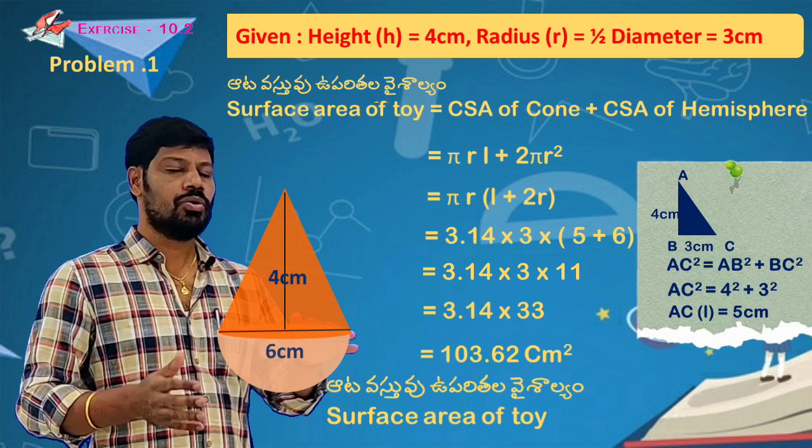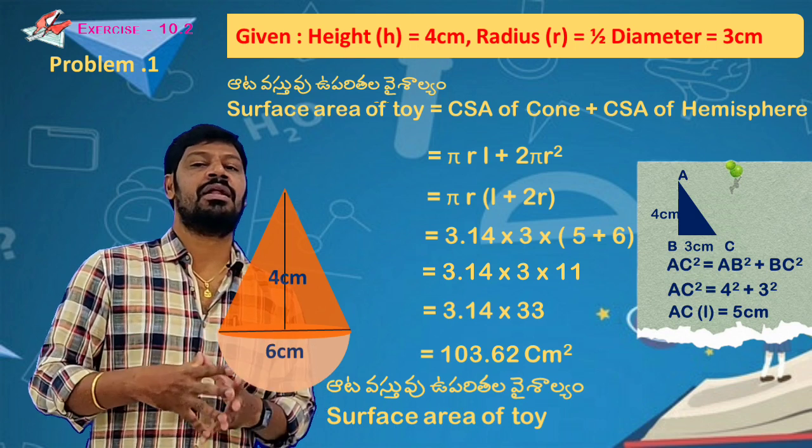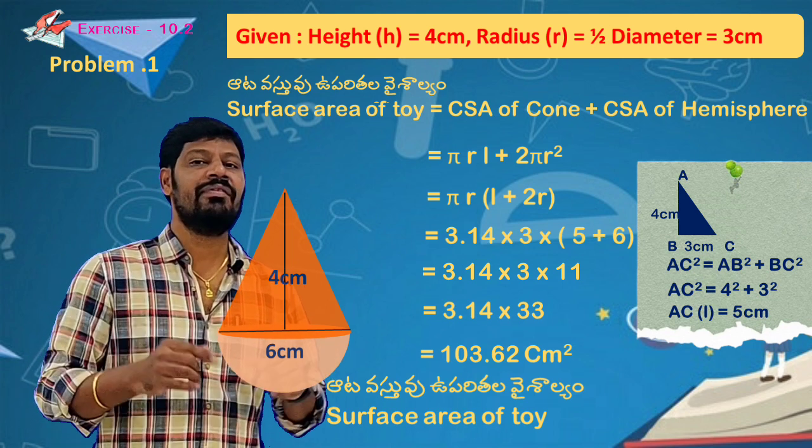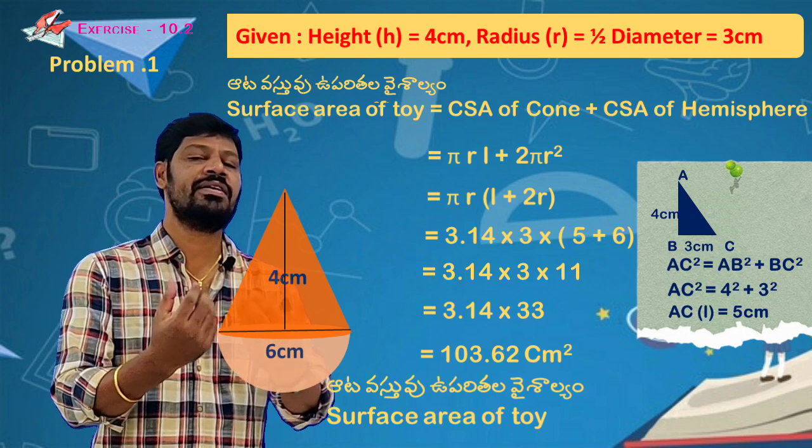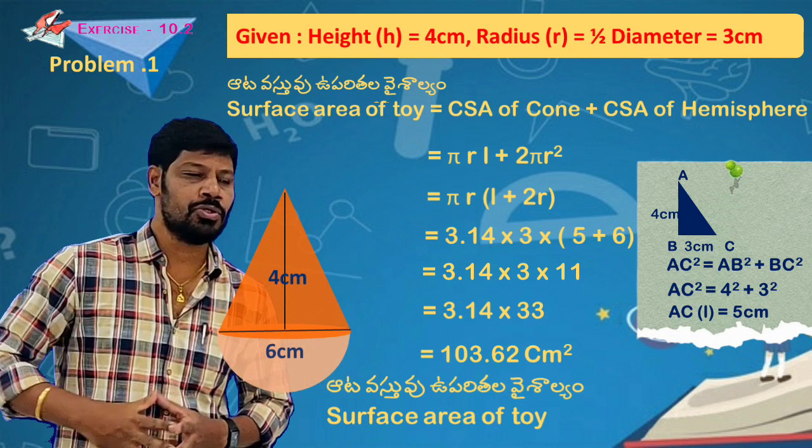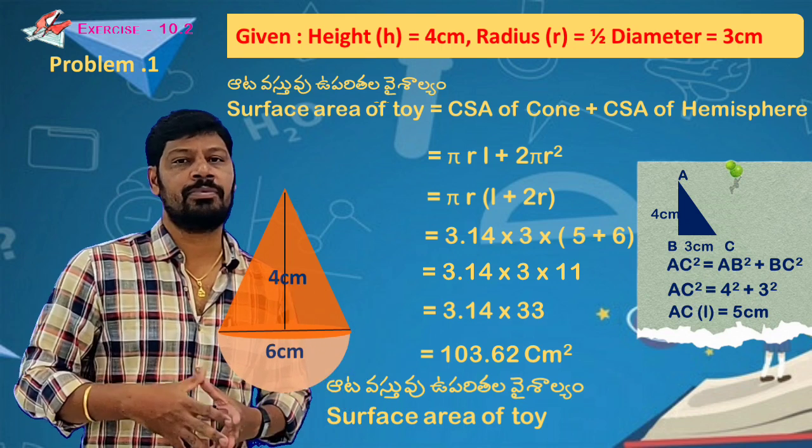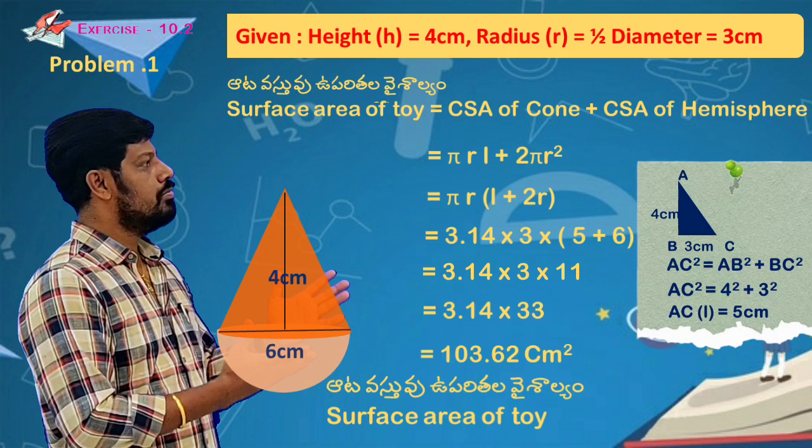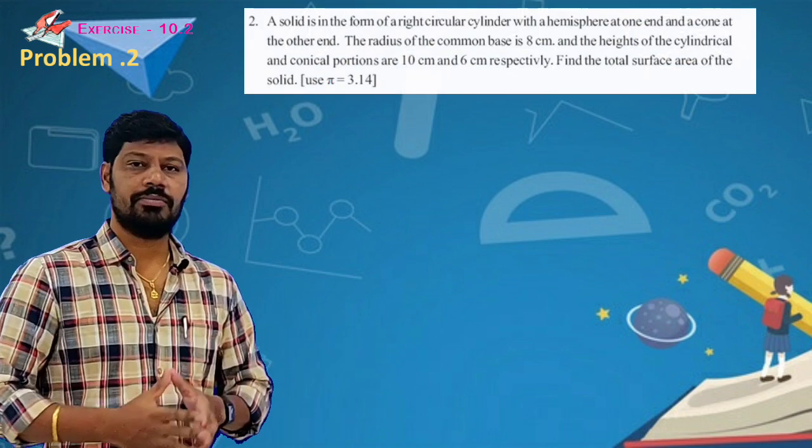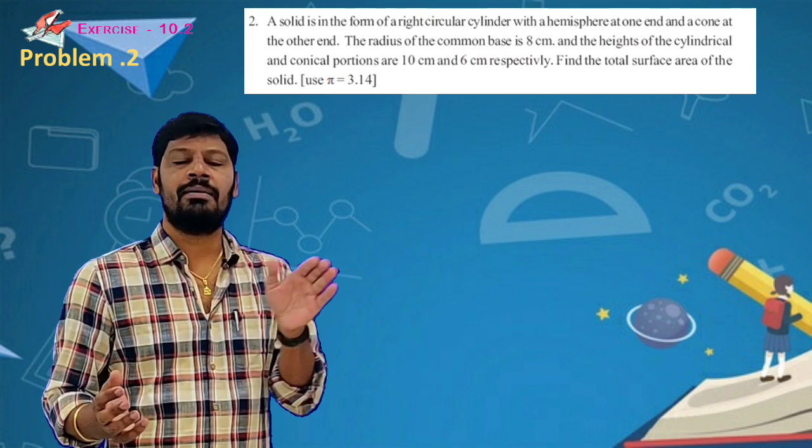My children, for the first question this is the explanation. The most important thing to avoid mistakes is to calculate carefully in combination of solids. Surface area requires attention. This is a simple problem. Now we will move to the next problem.